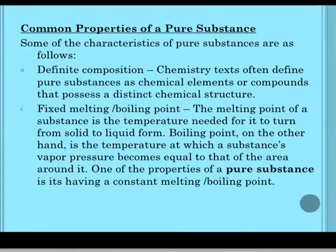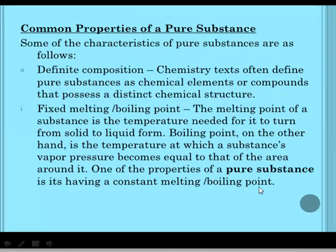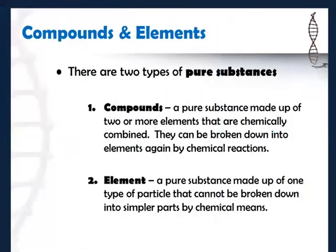Common properties of pure substances: they follow a definite composition. Pure substances possess a distinct chemical structure. They have a fixed melting or boiling point. For example, for water, the melting point is 0°C or 273 K, and the boiling point is 100°C or 373 K.